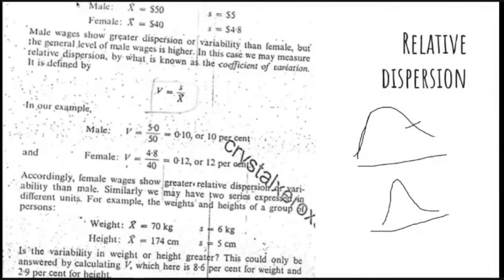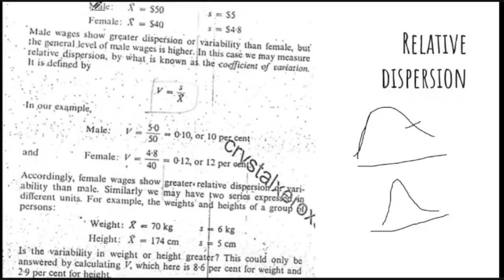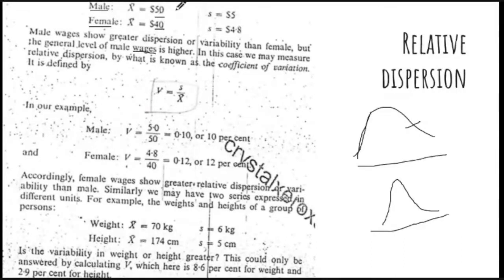Here you have data given — this is males' data and this is females' data, on wages. Male average is 50, female average is 50. Males' standard deviation is 5 and females' standard deviation is 4.8.